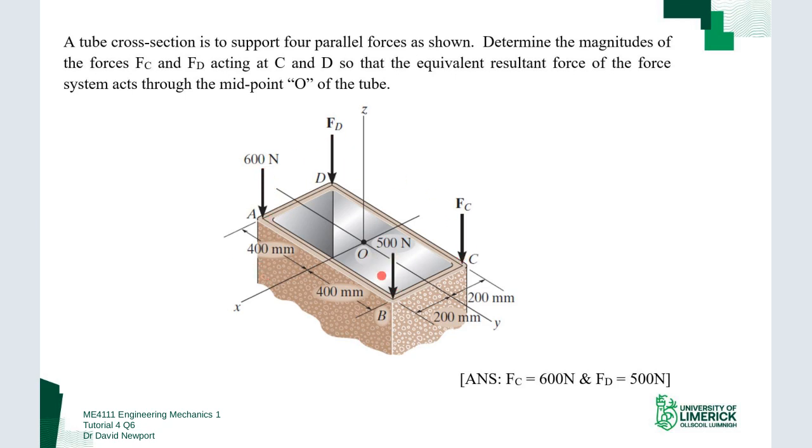So we've got the 600, the FD, FC and the 500, and we're asked to determine the magnitude of FC and FD so this force and this one acted at points C and D so that the equivalent resultant force of the force system acts through the midpoint O of the tube.